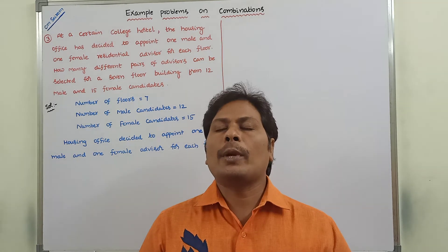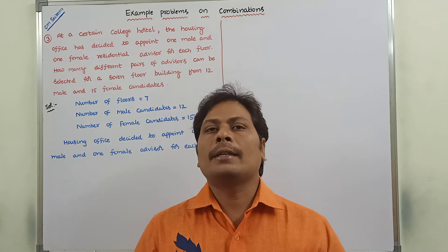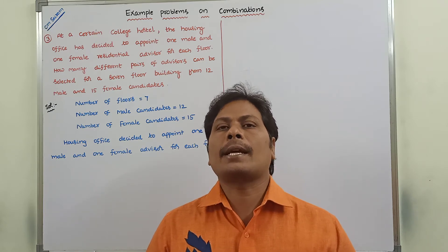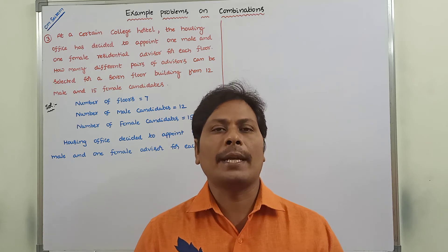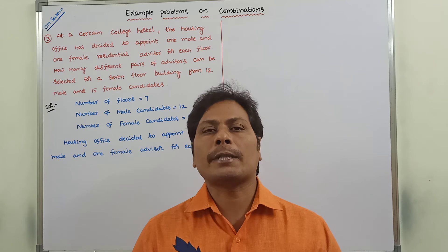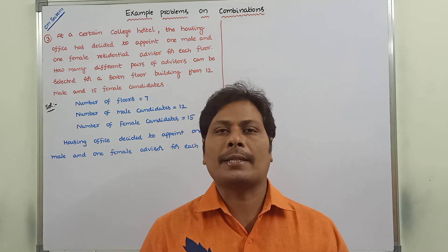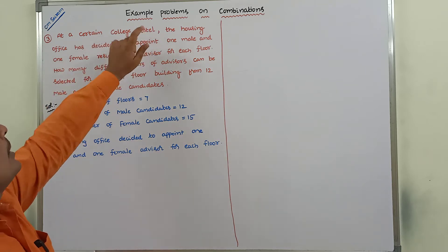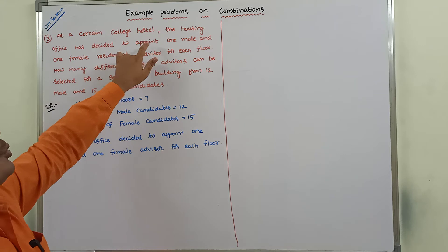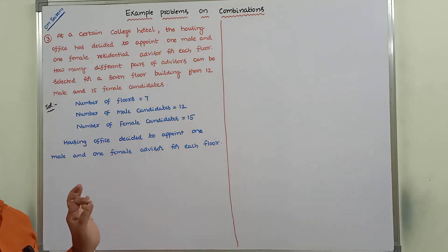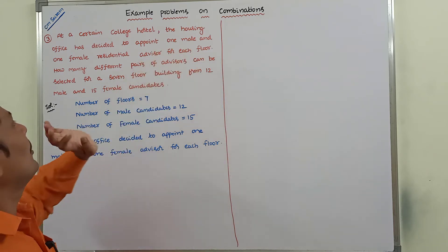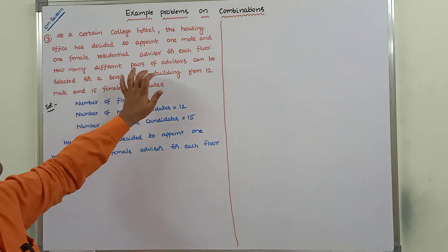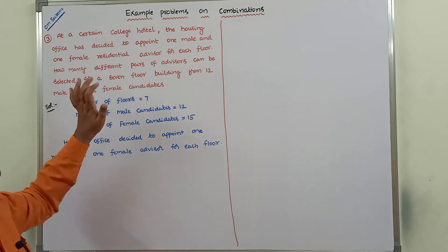Hi friends, today I am giving a lecture on example problems on combinations. In the previous video, we have already discussed about two example problems on combinations. Now in this video, we have to solve another example problem. At a certain college hostel, the housing office has decided to appoint one male and one female residential advisor for each floor. How many different pairs of advisors can be selected for a 7-floor building from 12 male and 15 female candidates?